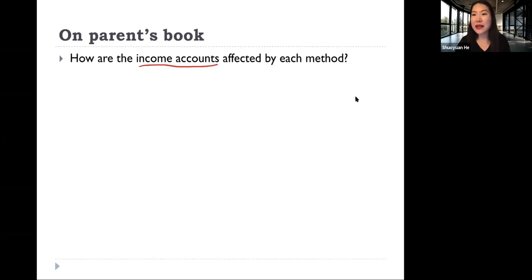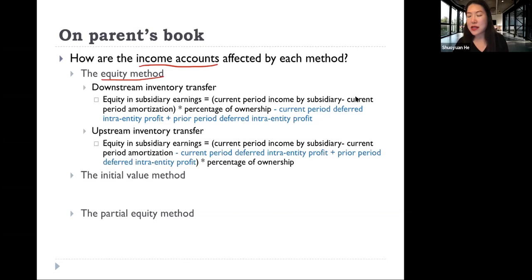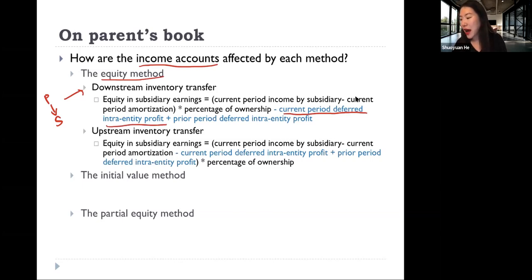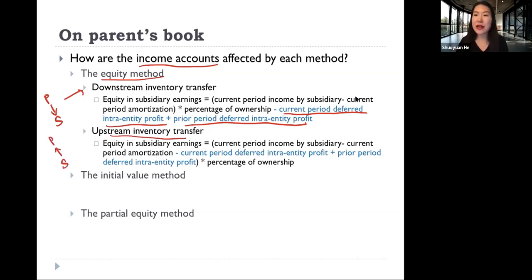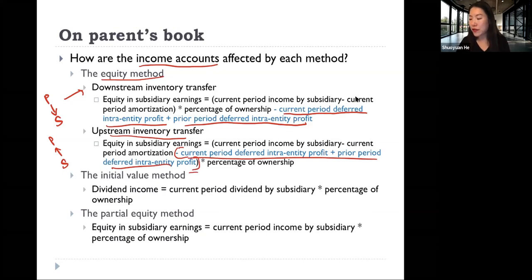Now let's look at the income accounts. Under the equity method for a downstream situation — parent selling to subsidiary — we take out the current period deferred Intra-Entity Profit and add back all previous periods' deferred Intra-Entity Profit, since those deferred inventories are assumed to have been sold in the current year. For upstream inventory transfer, the difference is that we multiply the deferred and reversed amounts by the percentage of ownership. For the initial value and partial equity methods, these are not affected by any intra-entity transactions.